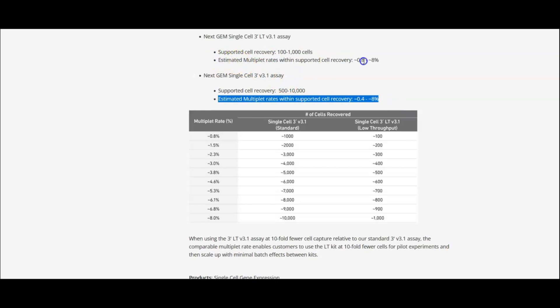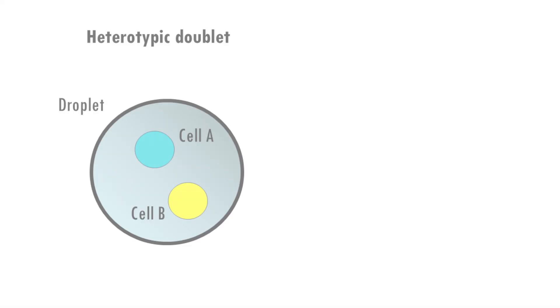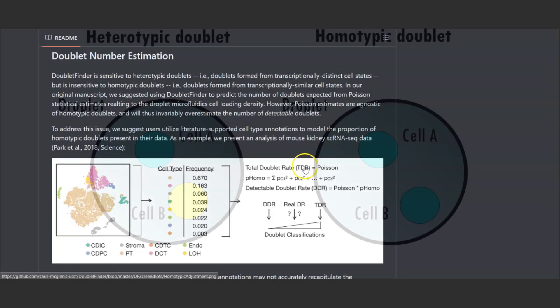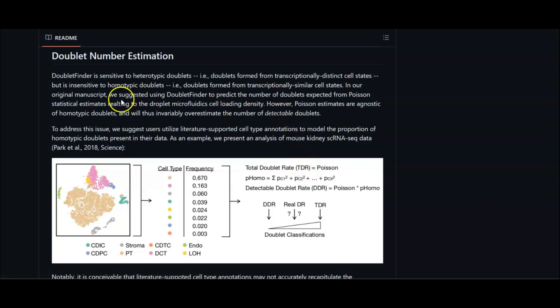So one more thing. DoubletFinder is great to detect heterotypic doublets—doublets formed by the combination of different cell states or cell types. But it's not so great at identifying homotypic doublets, doublets formed from transcriptionally similar cell states. The authors propose a way to account for this by correcting the estimated multiplet rate. So check that out as well.